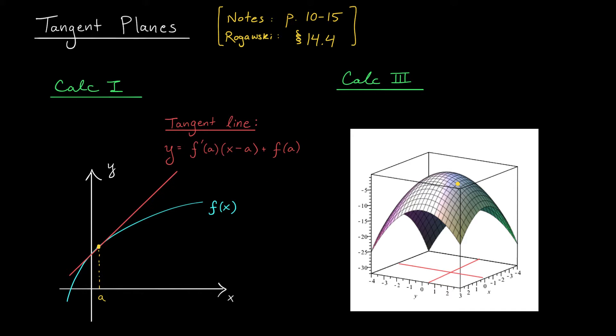After all, the derivative geometrically represents the slope of the tangent line. So, using our equation of the line formula, we get something like this. At x equals a, the tangent line is y equals f prime a times x minus a plus f of a. You may remember from calc 1 that the tangent line is often referred to as a linear approximation for our function f. And so we're going to try to do the same sort of thing in calc 3.